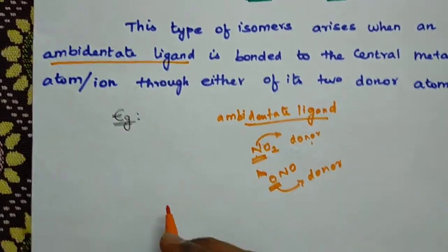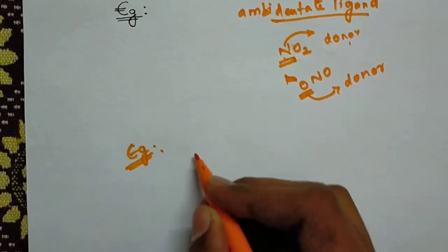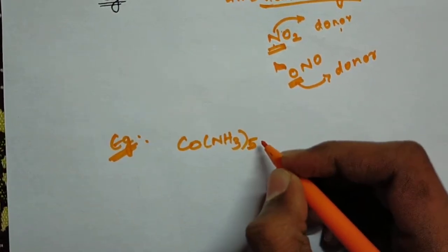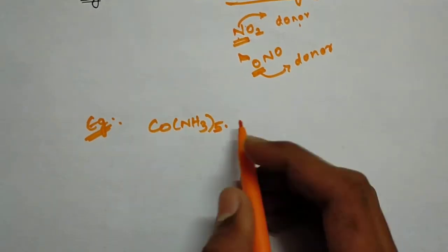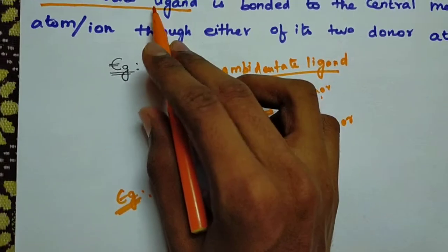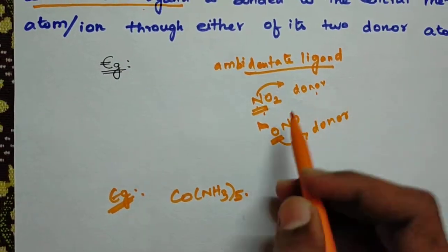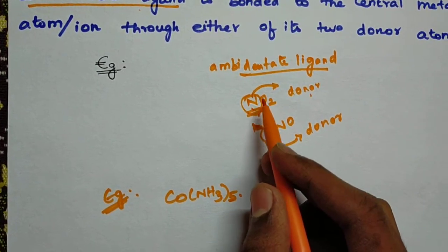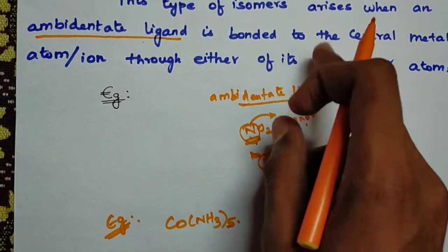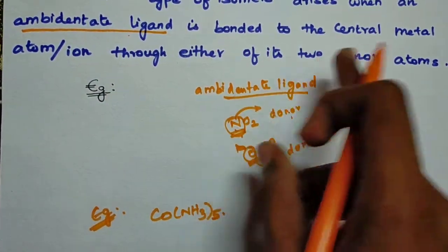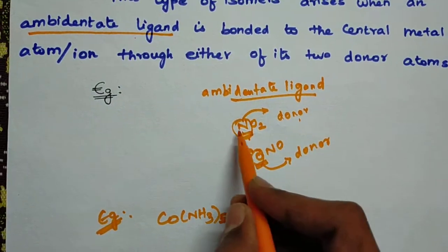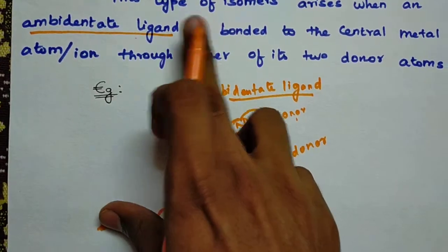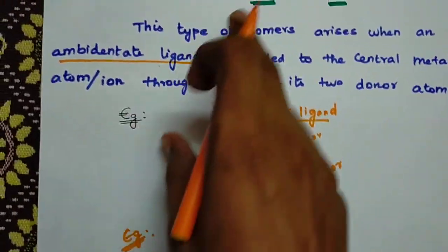Let's take an example: [Co(NH3)5NO2]2+. This complex has an ambidentate ligand NO2. This ligand has two possible donor atoms: nitrogen and oxygen. When it bonds to the central metal through either of these two donors, we get linkage isomers.